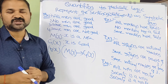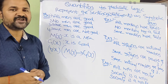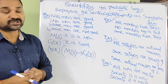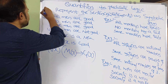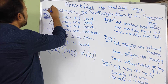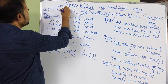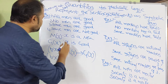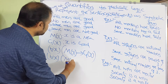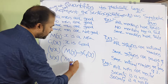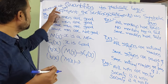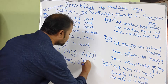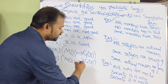The second sentence: 'No men are good.' We can rewrite this as 'All men are not good.' Since 'all' means universal quantifier, we write: for all x — men means M(x), the implication symbol, and not good means negation of G(x). So: ∀x(M(x) → ¬G(x)).